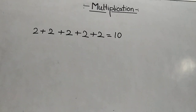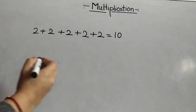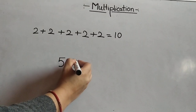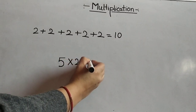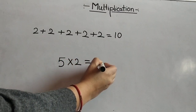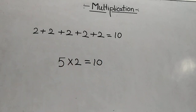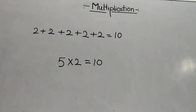In short form, we write it as 5 multiplied by 2 which is equal to 10. We also say 5 2s are 10.